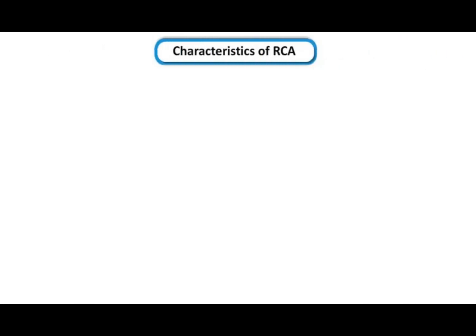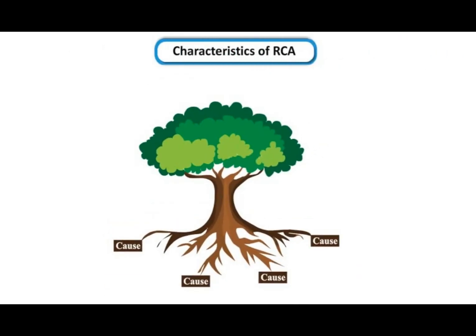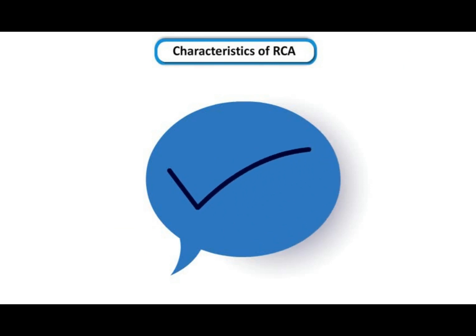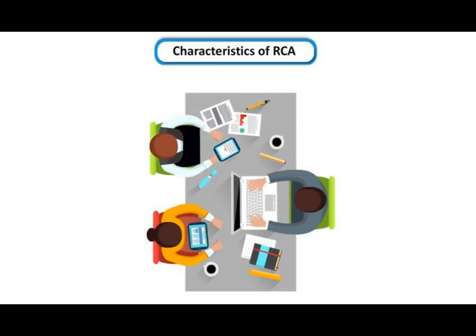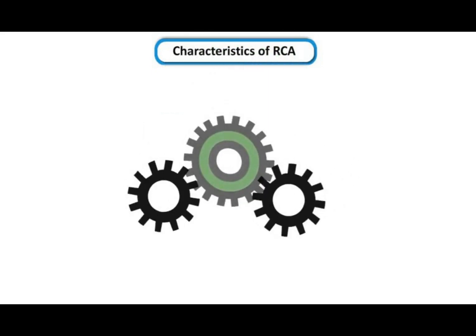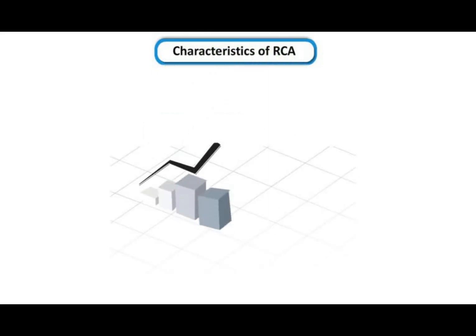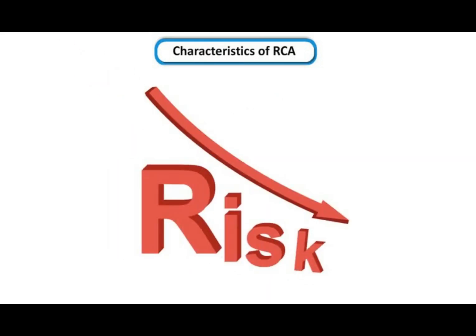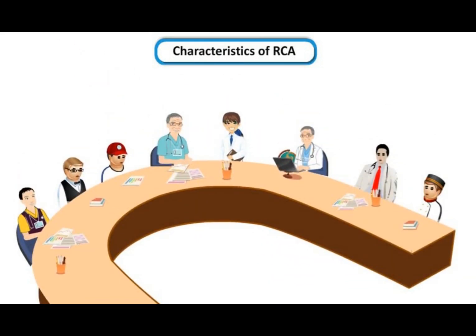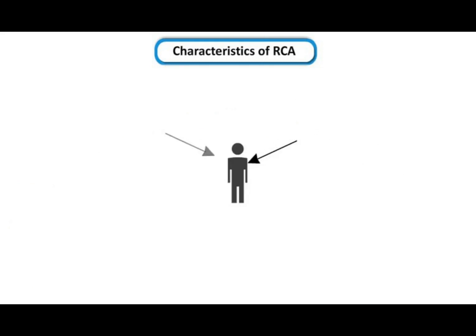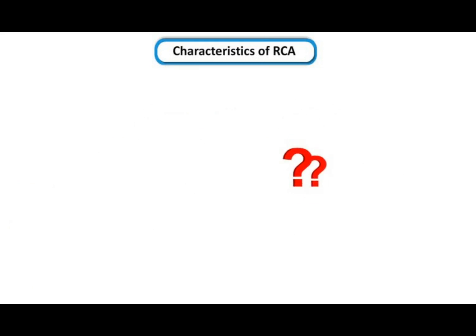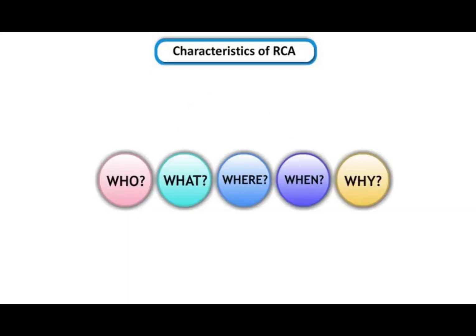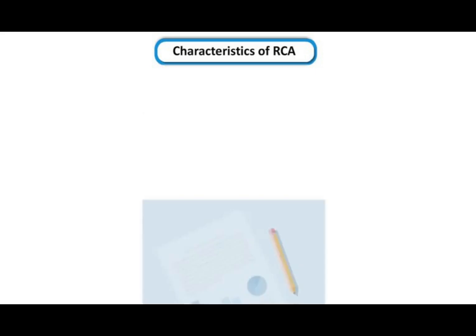Characteristics of RCA: RCA must be acceptable — involving interdisciplinary review, focusing on systems and processes not individuals, identifying changes in system and process, redesigning to improve performance and reduce risk of events, and providing an impartial review. RCA must be thorough — understanding human and other factors, identifying potential problems, analyzing through a series of why questions, identifying risk, and ensuring documentation.